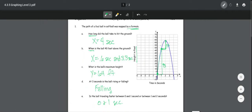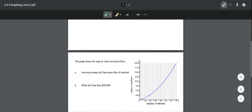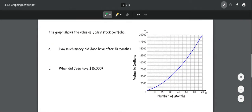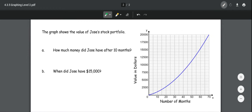So that is the first problem. I gained all of my information from this graph to find all of my pieces of information. So here's another one. The graph shows the value of Jose's stock portfolio. So first we want to figure out the Y value is value in dollars. The X value is the number of months.